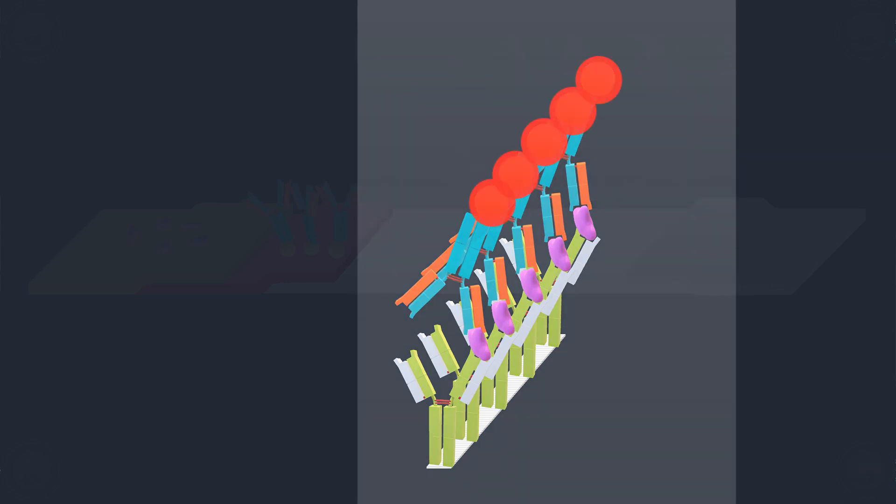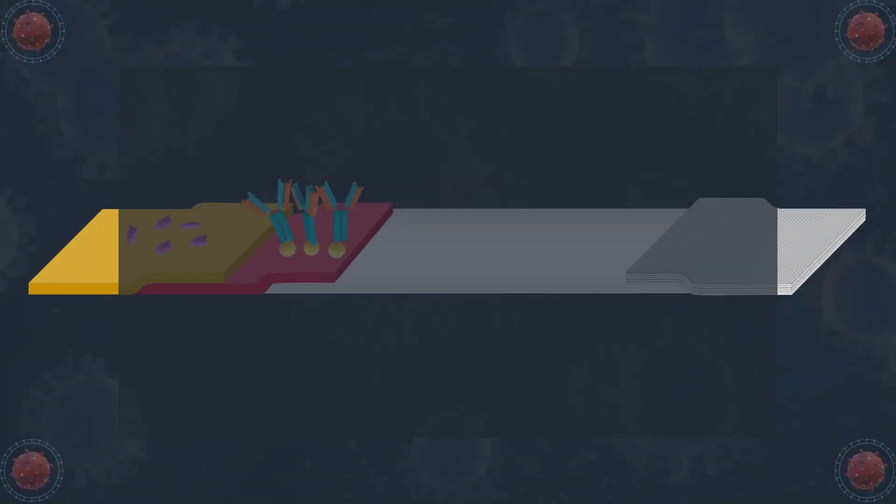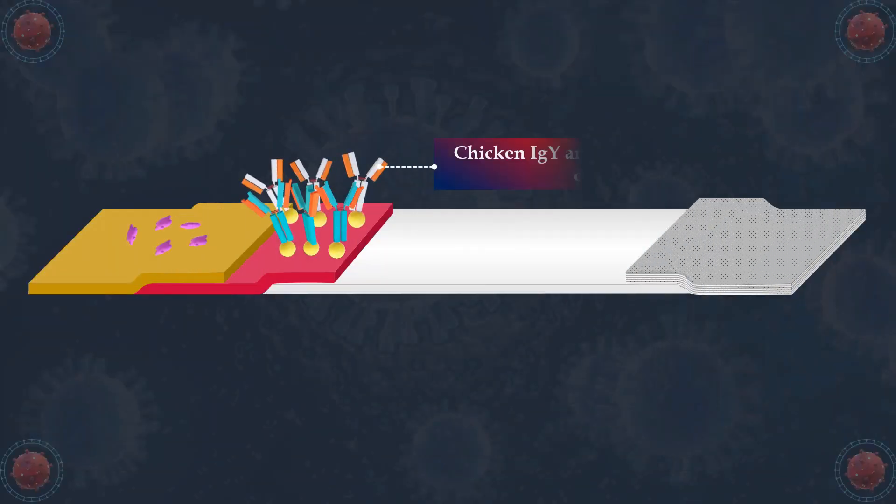The gold nanoparticles absorb and scatter light, resulting in a red color. In addition, chicken IgY antibodies labeled with gold nanoparticles exist in the conjugation pad, and they are used for quality control to assess test validity.